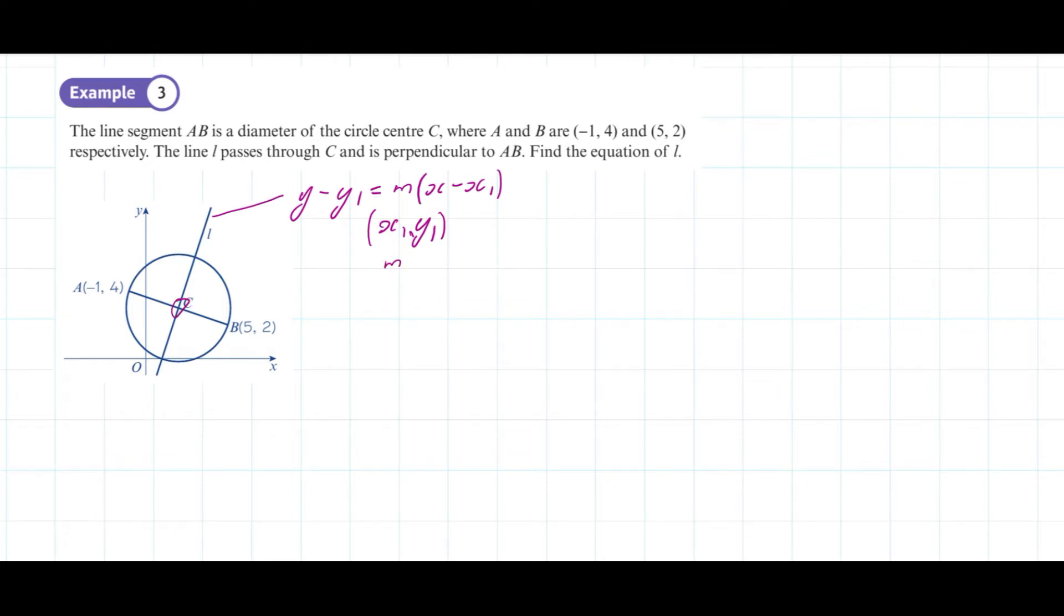We're also going to need the gradient. Now it says that this line L is perpendicular to the line AB. So what we've got to do is find the gradient of AB, use that to find the gradient of the perpendicular, and with the coordinates of C, use that to find the equation of the line L.